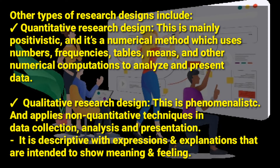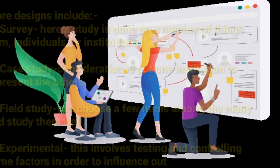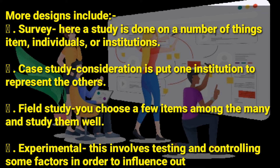Those are the first two types of research design. Looking at more designs: we have survey — studies done on a number of items, videos, or institutions, and survey is mainly done on samples. Then case study — consideration is put on one institution to represent others, for example choosing Makerere University to represent other universities in Uganda.